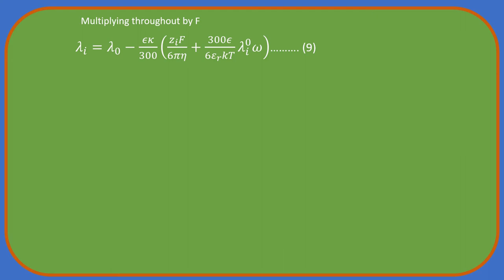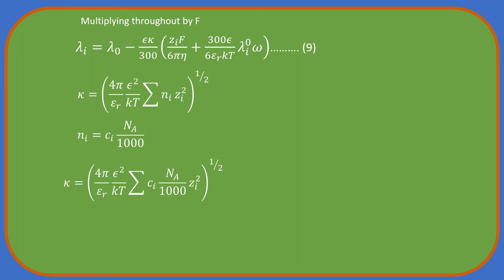We also know that kappa is defined, and the reciprocal of it gives the thickness of the ionic atmosphere. Here N i is the number of ions of type i. Converting into molar concentration, where N a is the Avogadro constant and C i is the concentration of ion of type i, we have the expression. Modifying kappa using this expression. Since we have only positive and negative ions, the summation in the above equation could be modified.